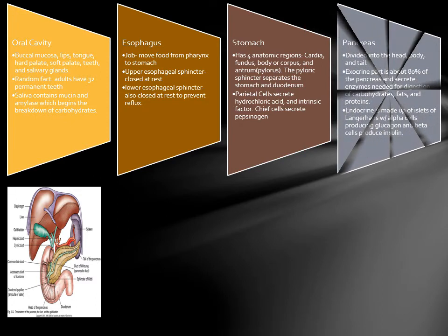The pancreas is divided into the head, the body, and the tail. The exocrine part is about 80% of the pancreas and secretes enzymes needed for digestion of carbohydrates, fats, and proteins. The endocrine portion is made up of islets of Langerhans, with alpha cells producing glucagon and beta cells producing insulin.